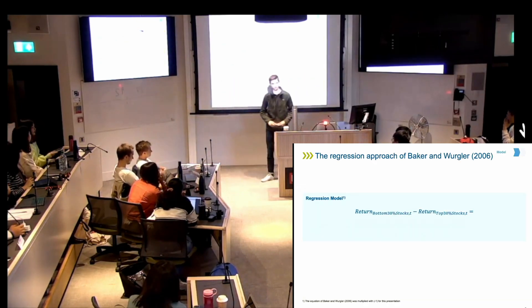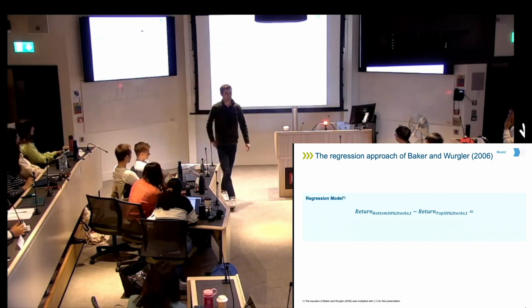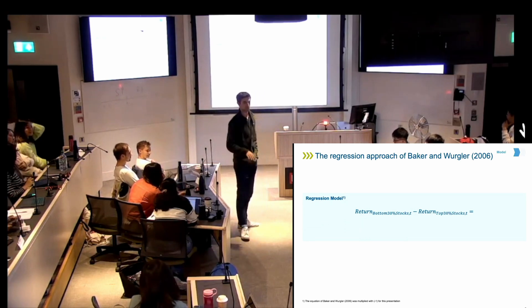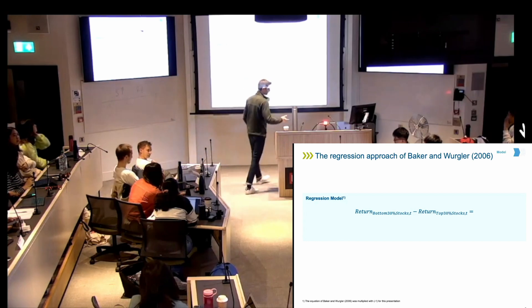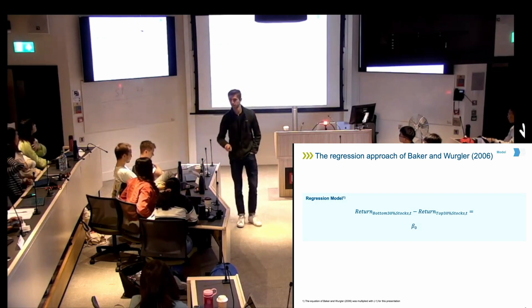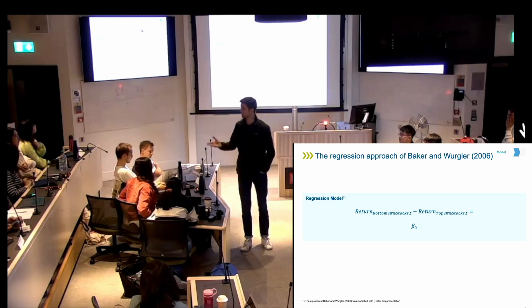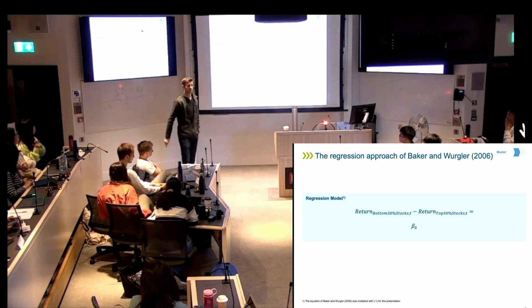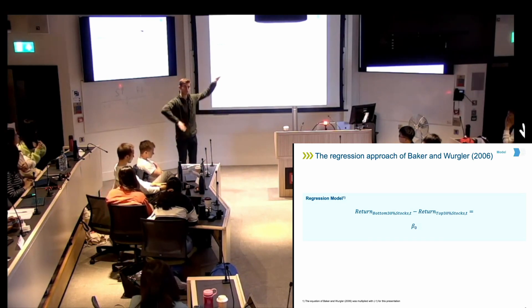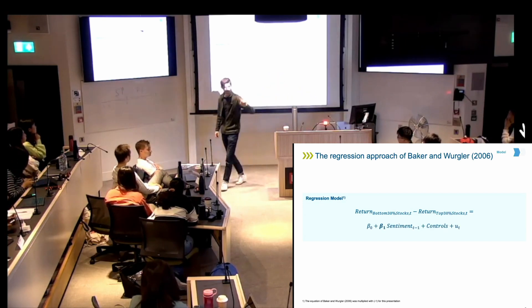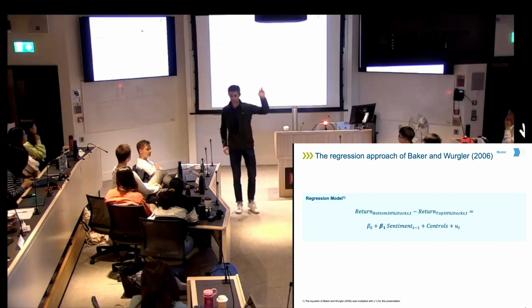Now we come to the regression model. The Y variable is just the return of my bottom 30% portfolio minus the return of my top 30% portfolio. The first variable we need is beta 0, which represents our CAPM beta — so if the systematic risk of those portfolios differs, it is captured in beta 0. And now comes the interesting variable: beta 1, which is our sentiment index. Then we have some controls and an error term.